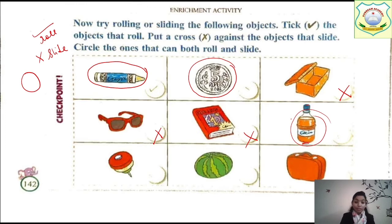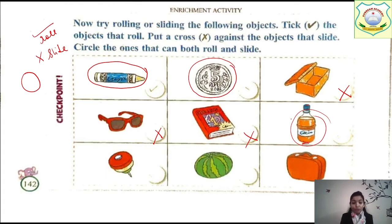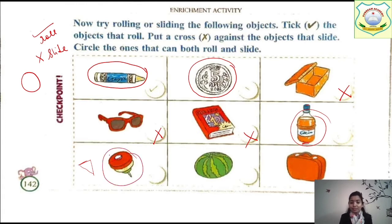Next we have this top — latu — what does it do? It spins. It has a cone shape. Your top has this kind of shape. So from here if we put it, it will slide, and if we keep it from this side, it will roll — so it does both, roll and slide. But if we talk about this watermelon, it will only roll. And if we talk about this suitcase, it will only slide.